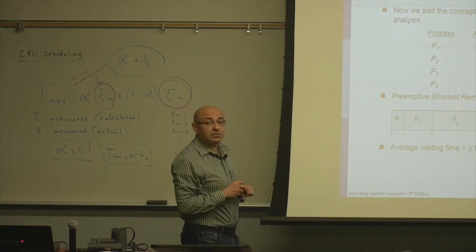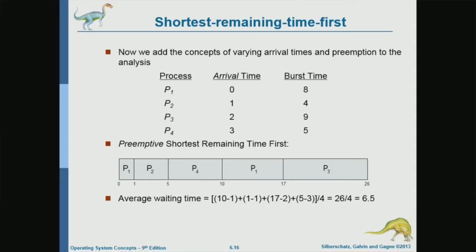At time two, the system has another option that has arrived — now we have three options. The lengths being compared are: seven for P1, three for P2 (since P2 has used one unit), and nine for P3. Comparing seven, three, and nine — three wins, which means P2 keeps the CPU. So at time two, P2 keeps the CPU.